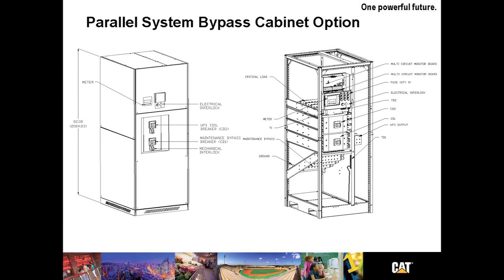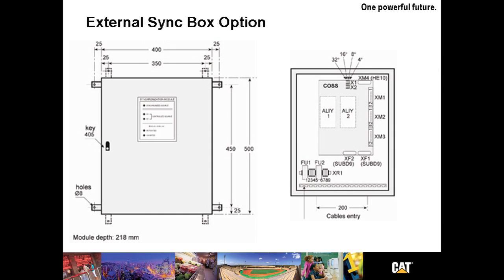The external sync box option provides for connections to synchronize the output of the UPS through the inverter to an external source or UPS. Typically one box is required per synchronized system. It provides for connections in the UPS to communicate with the external sync box for synchronizing to the external source or UPS, and requires one board per UPS being synchronized. Interestingly enough, this sync box option can sync to other UPSs, gensets, or even the utility.